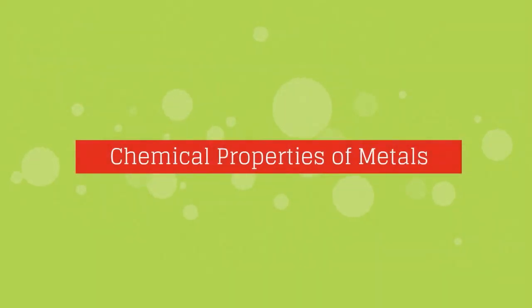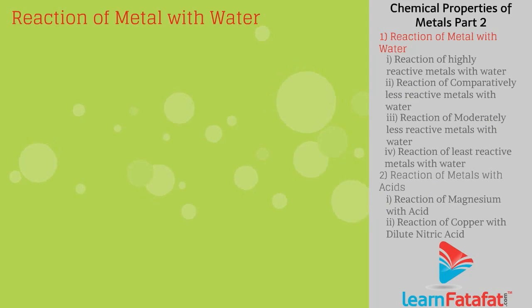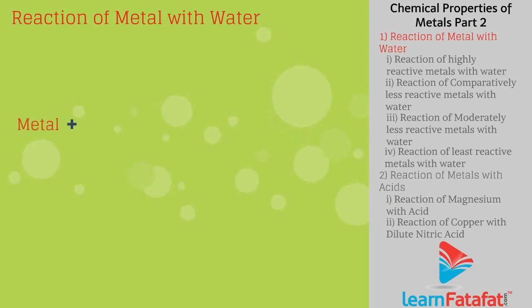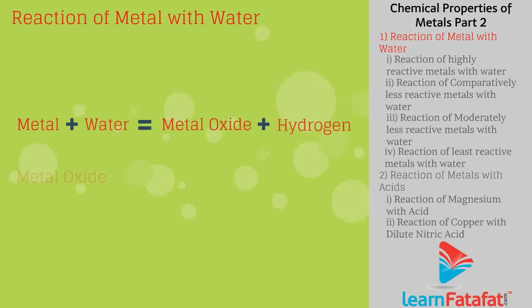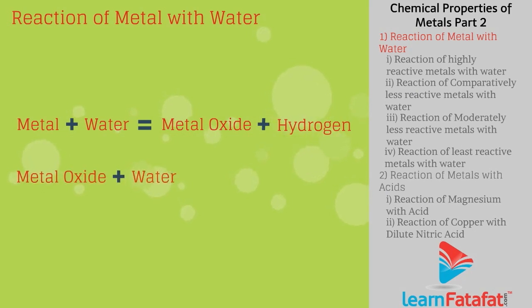Chemical properties of metals. Reaction of metals with water. Metals react with water and produce metal oxide and release hydrogen gas. These metal oxides, if dissolved in water, form metal hydroxides.